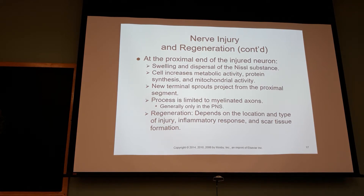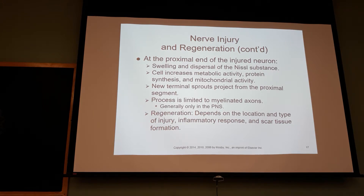Regeneration depends on the location and the type of injury. Anytime you damage a nerve cell, you get an inflammatory response — swelling, macrophages, the same type of inflammatory process. It depends on the type of injury whether it's going to regenerate or not.